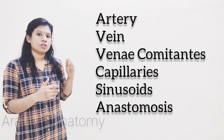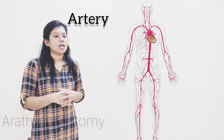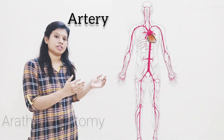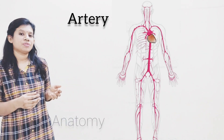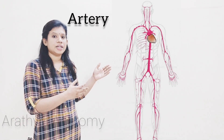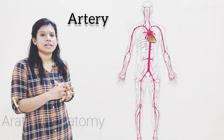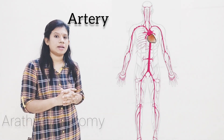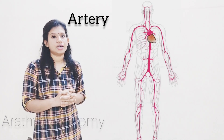Moving on to the first one — what is artery? Artery means they carry blood away from the heart. Arteries usually carry oxygenated blood. But there are exceptions for this: the umbilical artery and pulmonary artery usually carry deoxygenated blood.